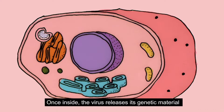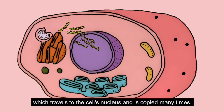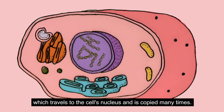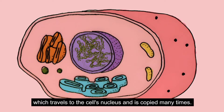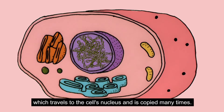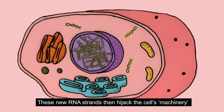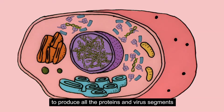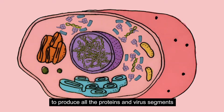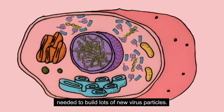Once inside, the virus releases its genetic material, which travels to the cell's nucleus and is copied many times. These new RNA strands then hijack the cell's machinery to produce all the proteins and virus segments needed to build lots of new virus particles.